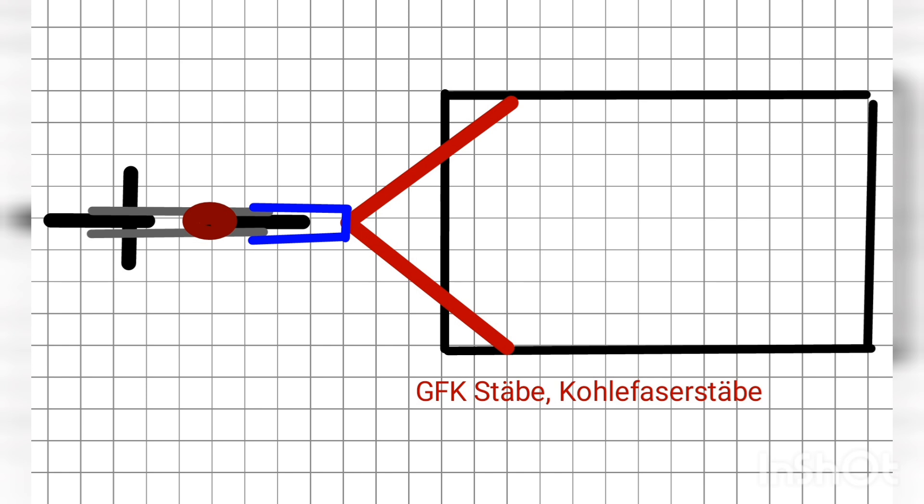On the right side you see the caravan. Drawn in red in V-form is the drawbar. It's constructed in this V-form like the drawbar on car trailers. But this doesn't consist of metal, of strong, heavy metal, but of GFK.